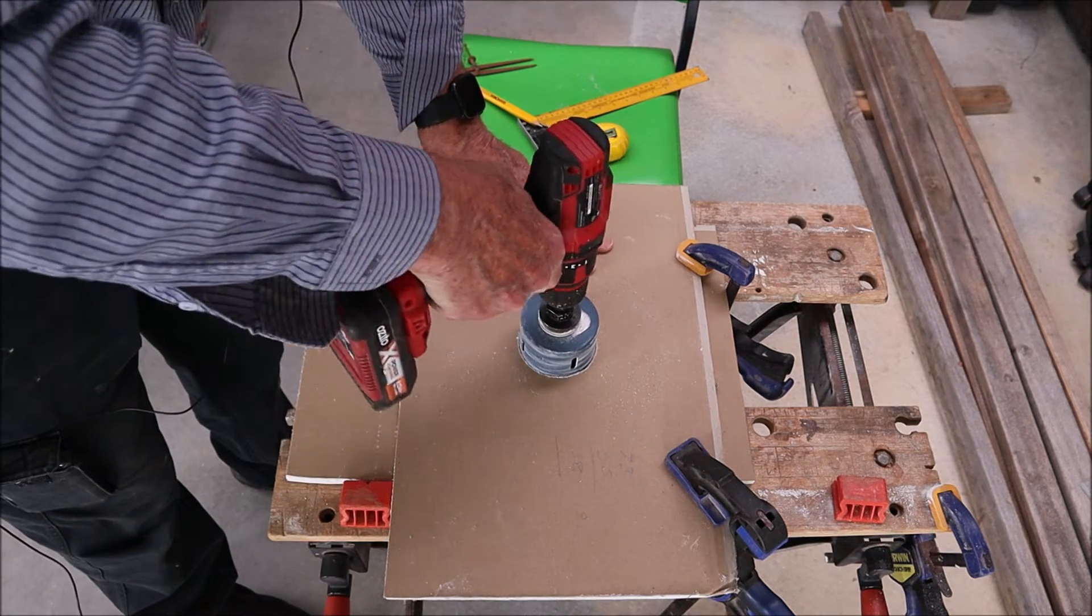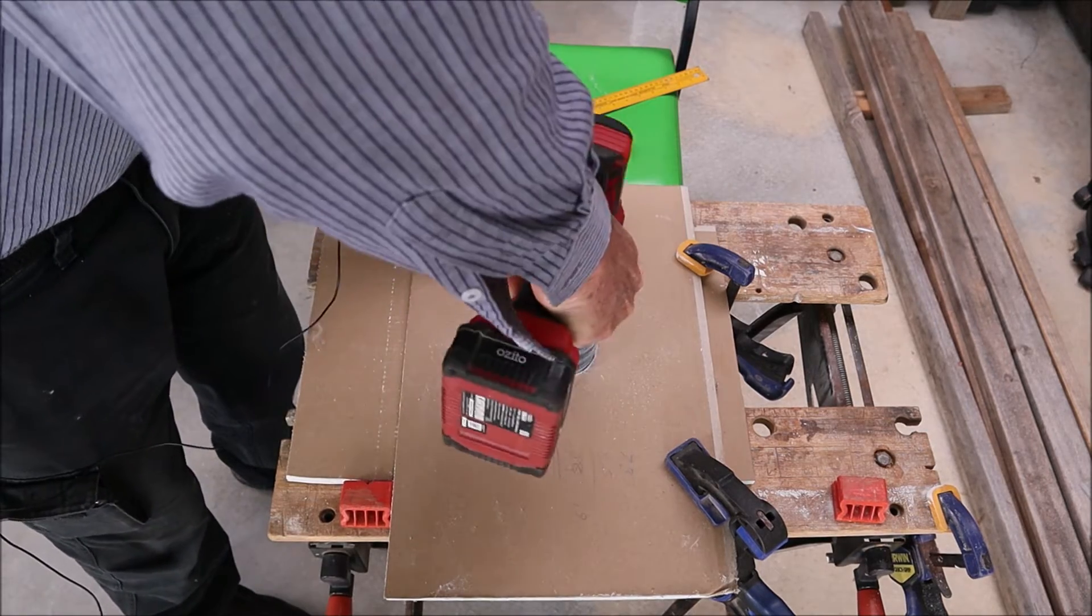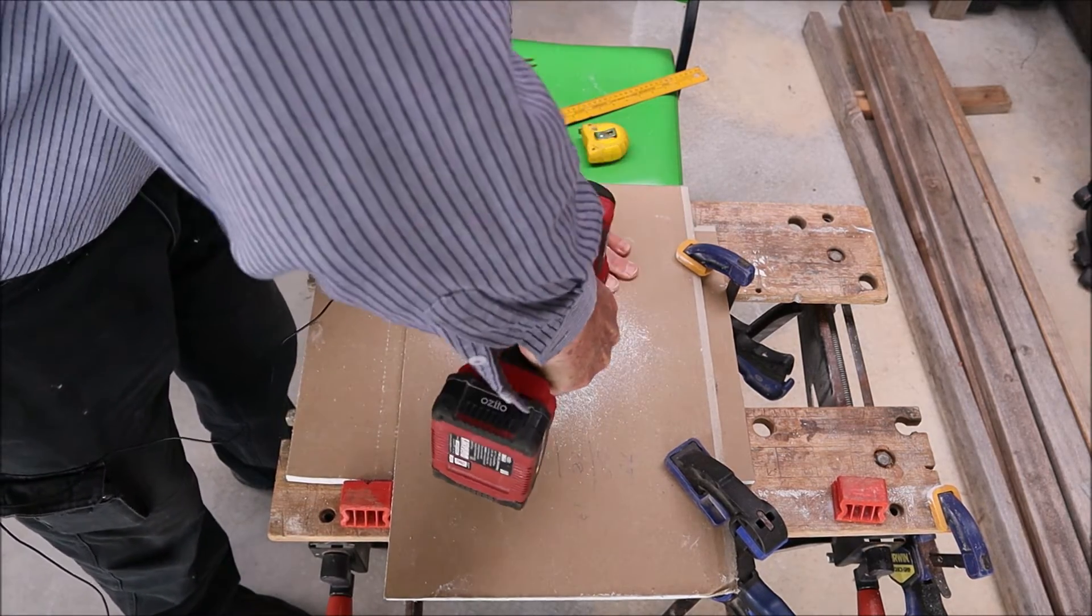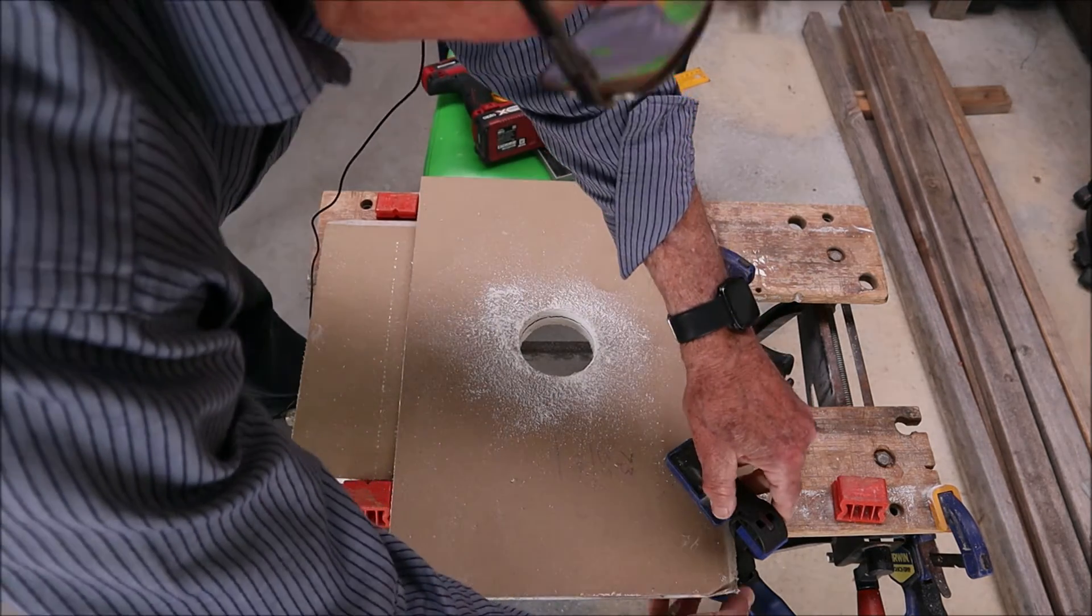Put another clamp on that side. Then we take our new drill, using our template as a guide, slip it in until it's touching there. Now we know it's more or less central.